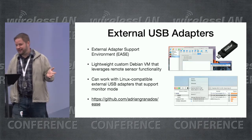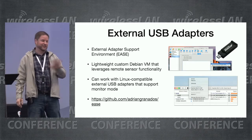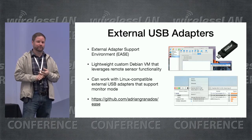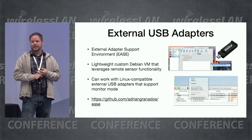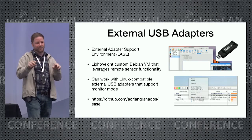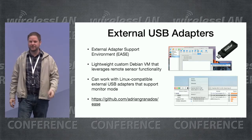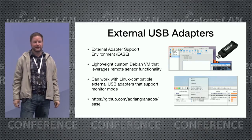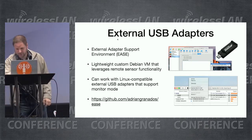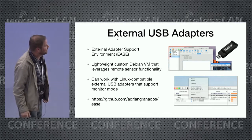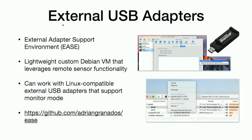Using the same remote sensor script — now running as a local sensor — it starts scanning with the external adapter and you see the results in the tool. I named this the External Adapter Support Environment. It's easy to configure: install VirtualBox and Vagrant, download a file, run 'vagrant up' in your terminal, and it handles downloading the image, installing drivers, configuring everything, and setting up the sensor. You launch Wi-Fi Explorer Pro, connect the USB adapter, and it appears as an option. If the adapter works in Linux in monitor mode, it will probably work in this setup.